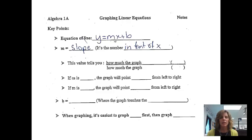That's the slope-intercept form of the equation. We learned from doing stations that m is called the slope, and it's the number in front of the x value. This value tells us how steep it is, so it's going to tell us how much the graph rises over how much the graph runs, and we're going to have that as y over x.